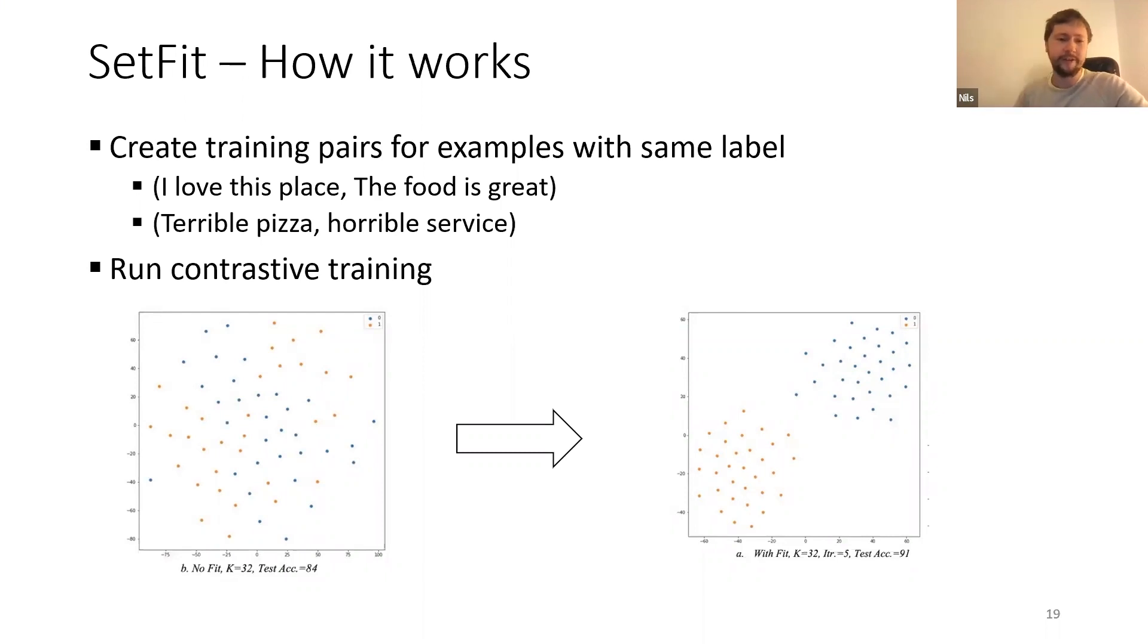But now with this contrastive training where you say "I love this place" and "the food is great" should be close, "I love this place" and "horrible service" should be distant in the vector space, you tell, hey, that's what I want to have close and distant in the vector space. And then you get a really nice vector space like this where you can train an easy logistic regression classifier on top of this. Awesome.